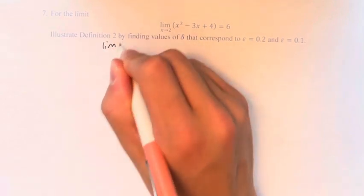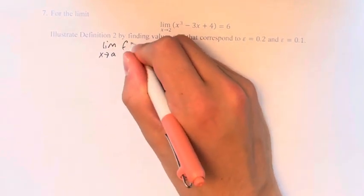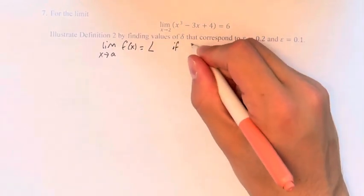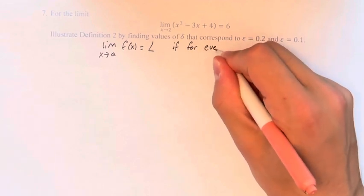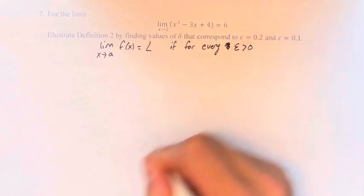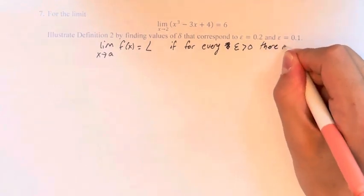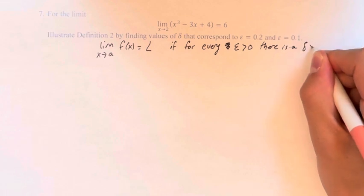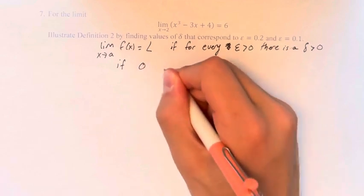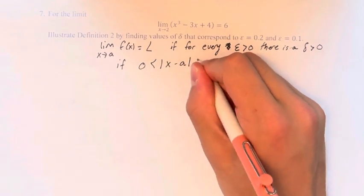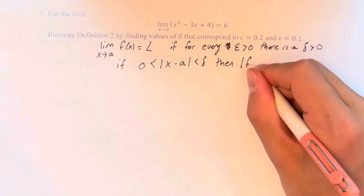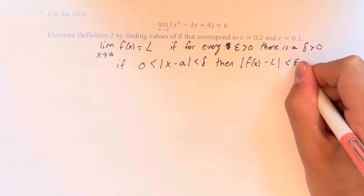It states that the limit as x approaches a of f of x equals L if for every epsilon greater than 0, there is a delta greater than 0, such that if 0 is less than the absolute value of x minus a is less than delta, then the absolute value of f of x minus L is less than epsilon.